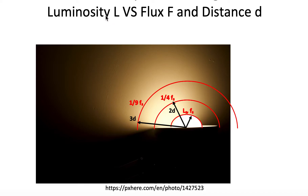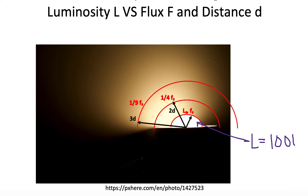The first thing we want to go over is luminosity L. Luminosity is power — it's the power output at the surface of the light bulb. So let's say we bought a light bulb that has a power output of 100 watts at its surface. That is the power, which we call the luminosity when talking about light, and the units are watts, a power unit.